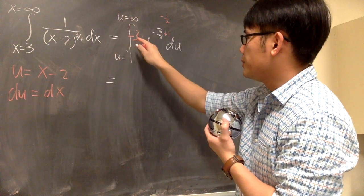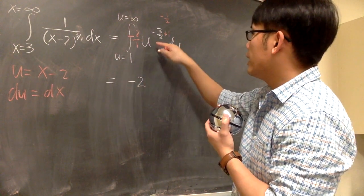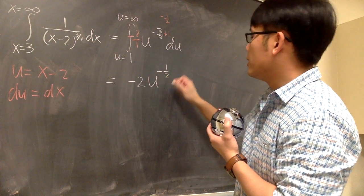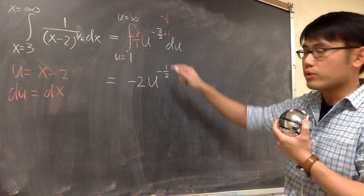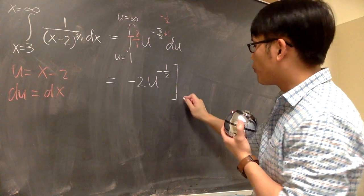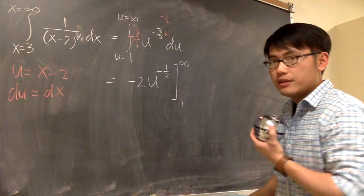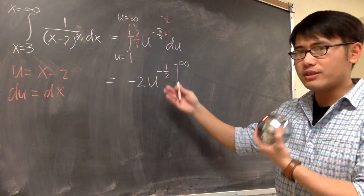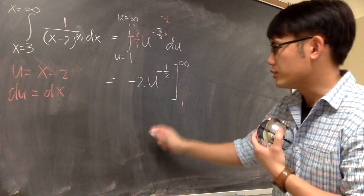So that will be the anti-derivative. The anti-derivative of this is going to be negative 2, and we have u to the negative 1 half power. I can work in the u world, from 1 to infinity. When you have negative exponents, let's bring it down to the denominator to see what we can do.